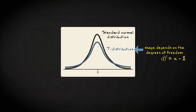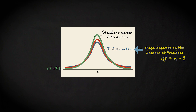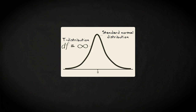The blue t-distribution you see here has 2 degrees of freedom. A t-distribution with 5 degrees of freedom looks like this, and a t-distribution with 30 degrees of freedom looks like this. This means that when we have 30 or more degrees of freedom, the t-distribution is almost identical to the standard normal distribution. More precisely, the standard normal distribution is the t-distribution with df equals infinity.